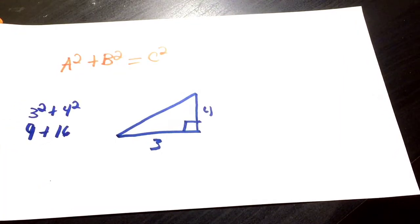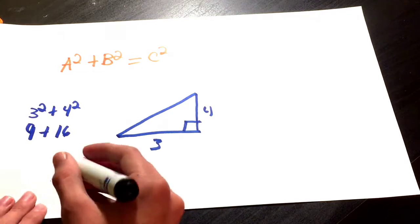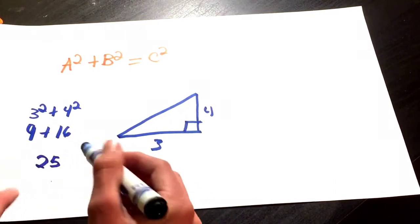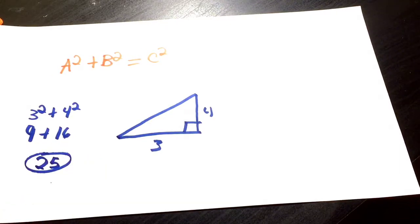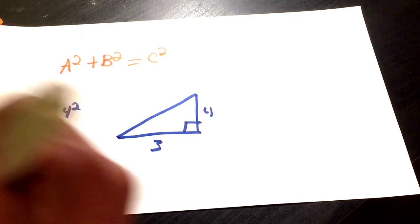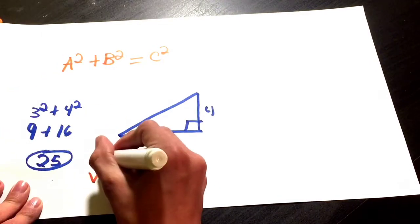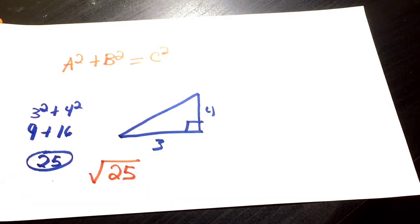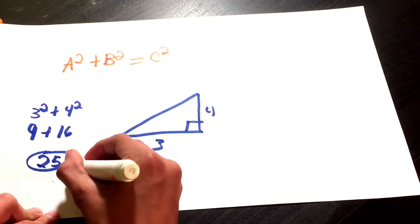Now basically, 9 plus 16 is 25. All right, and that's our number here. And now we're going to want to find the square root of that. Okay, so what is the square root of 25, you ask? Well, 5 times 5 is 25, and so the square root is 5. So the hypotenuse equals 5.